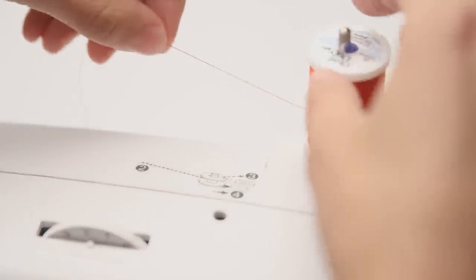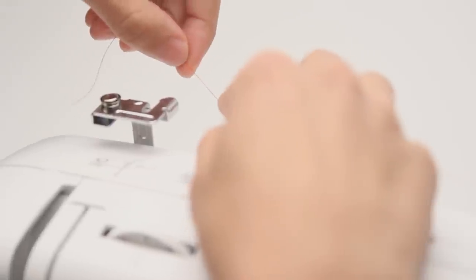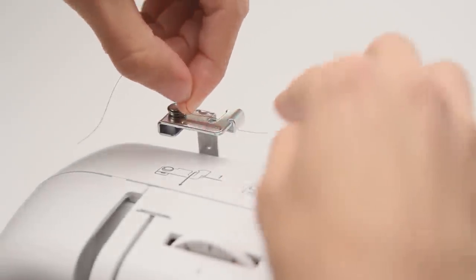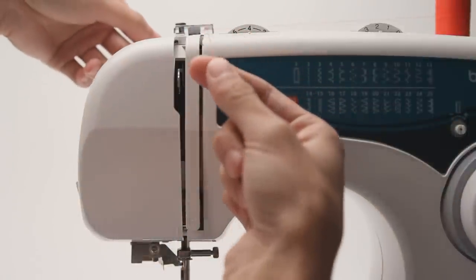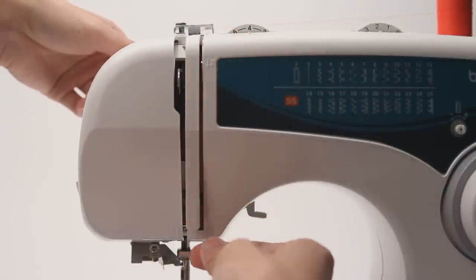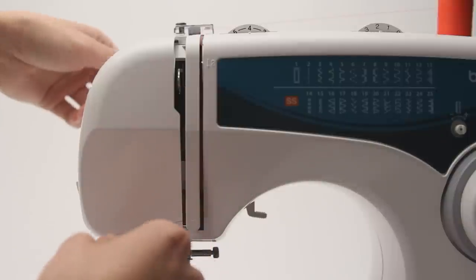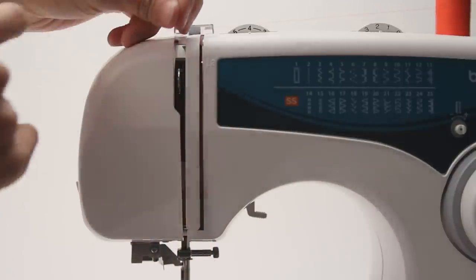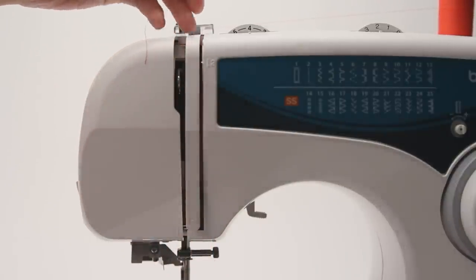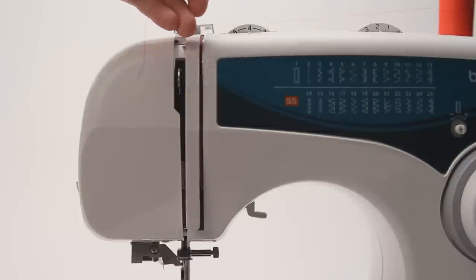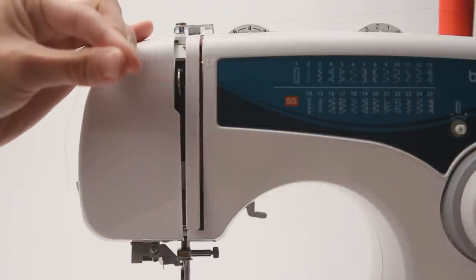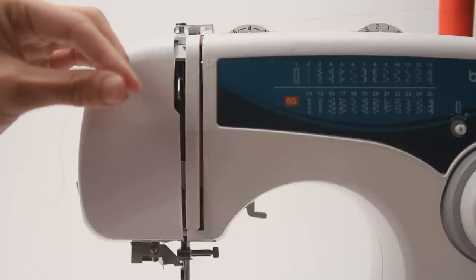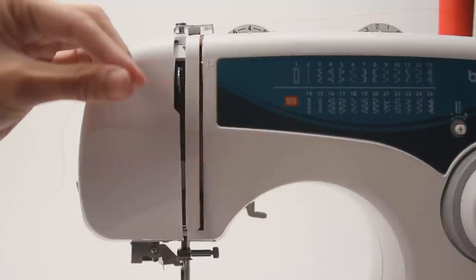So now that you've got your bobbin wound, you'll want to take your thread and bring it across the thread guide here. And to do that, you'll just bring it around the back, like that, simple. And then you'll bring the thread down the front, back up, and then you'll catch it in this metal loop that's inside the machine here. And just in case this loop isn't where you want it to, you can always use the manual handle on the right to kind of just move it into place wherever you need.